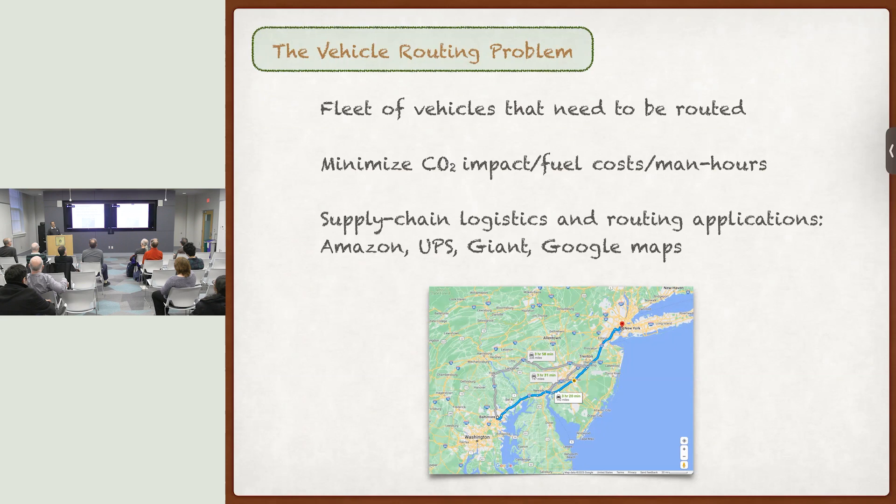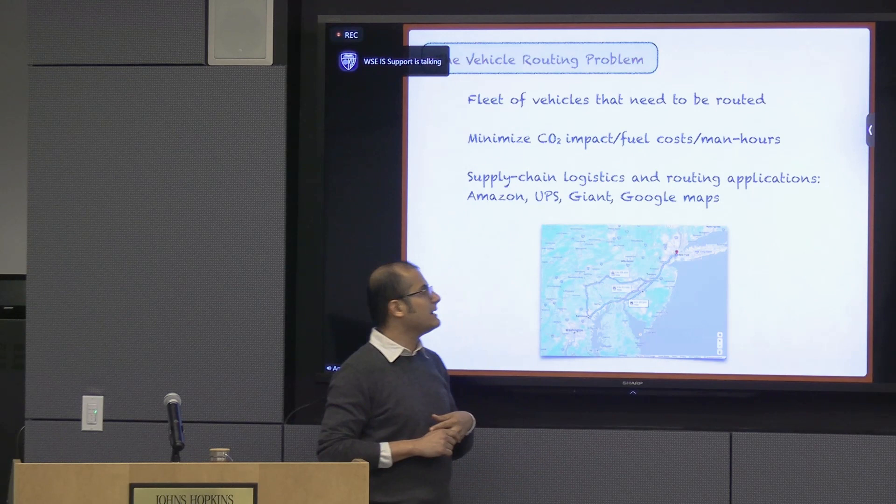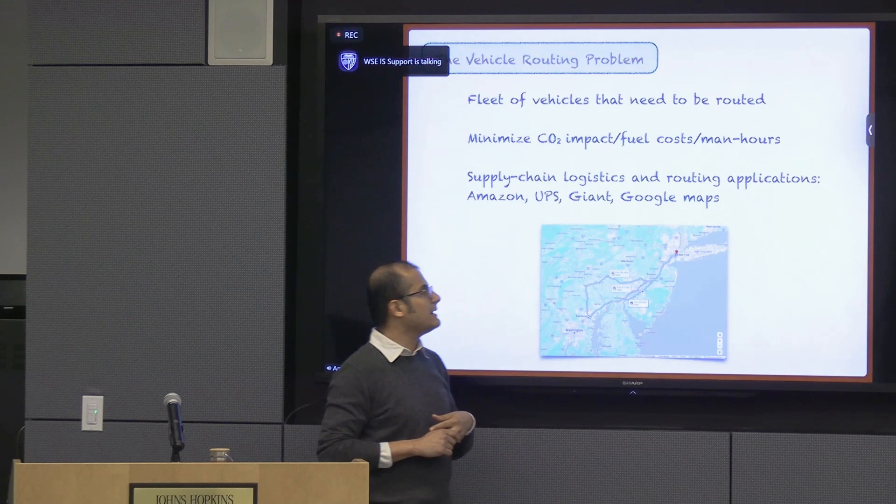The first problem is a so-called vehicle routing problem. So think about Amazon. It has a bunch of packages that its trucks have to deliver. These packages have to be delivered at different locations. There's a certain deadline by which these have to be delivered. And let's say Amazon is interested in minimizing its CO2 impact because of these trucks. Or maybe it wants to minimize the fuel costs that it has because of these. And let's say, if you're deploying drones, then you might want to conserve battery life. So, of course, this is a problem that many, many companies need to solve. For example, UPS or grocery chains like Giant or Safeway.